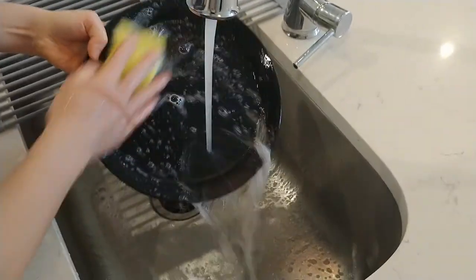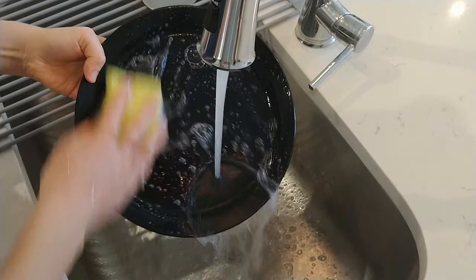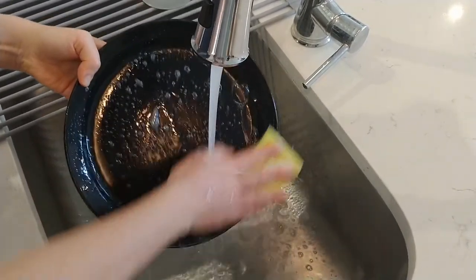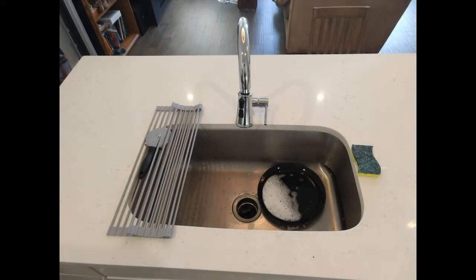Wet etching is a bit like doing the dishes. We pick a chemical, like dish soap, that dissolves the material we want to get rid of, like waste food, but does not react with the substrate we are working on, like the ceramic plate. Then, we place the sample in the chemical and wait, like letting a dish soak.